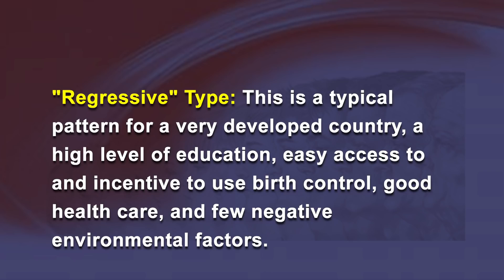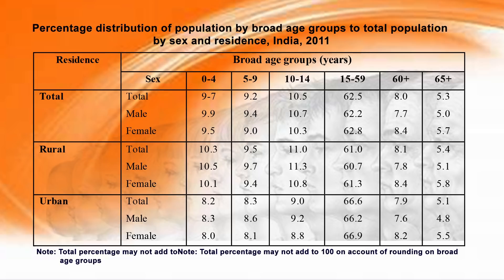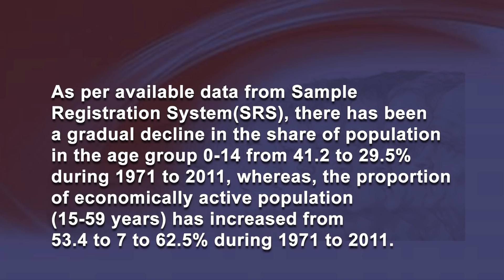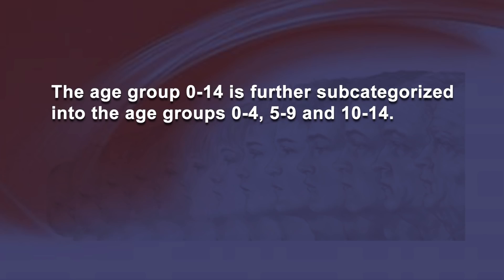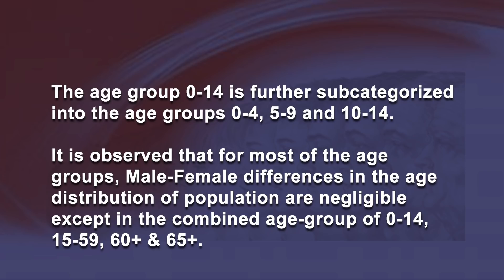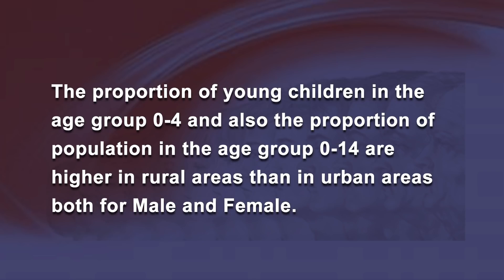As per available data, there has been a gradual decline in the share of population in the age group 0 to 14, from 41.2% to 29.5% during 1971 to 2011, whereas the proportion of economically active population aged 15 to 59 years has increased from 53.7% to 62.5% during the same period. The age group 0 to 14 is further subcategorized into 0–4, 5–9, and 10–14. Male-female differences in age distribution are negligible except in the combined age groups 0–14, 15–59, 60 and above, and 65 plus. The proportion of young children aged 0–4 and the proportion aged 0–14 are higher in rural areas than in urban areas, both for males and females.